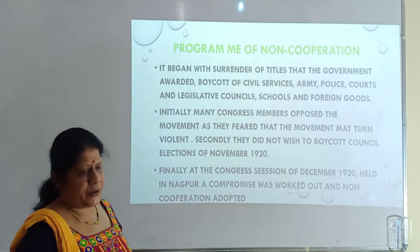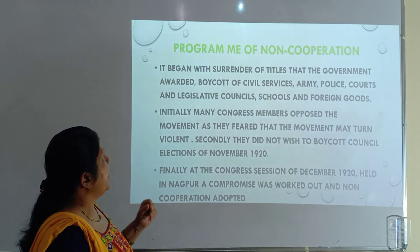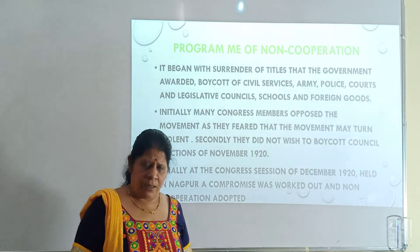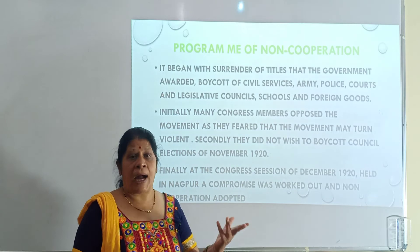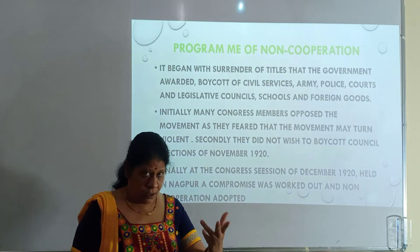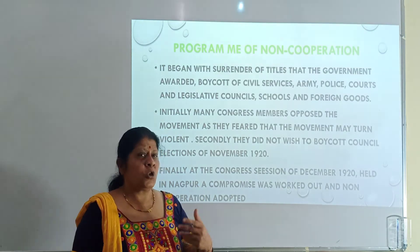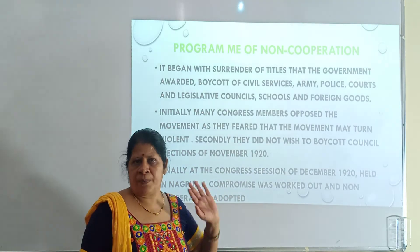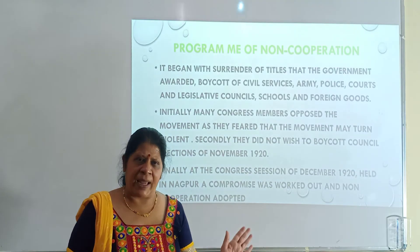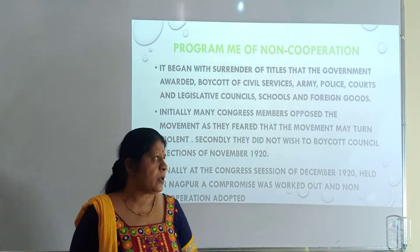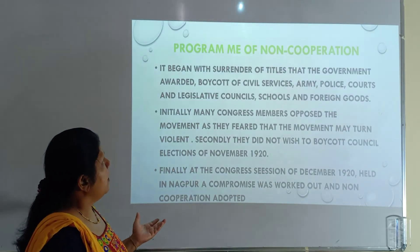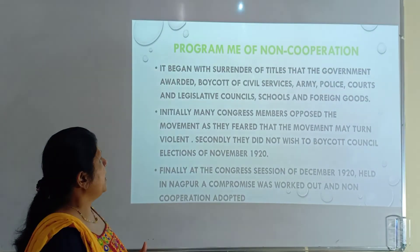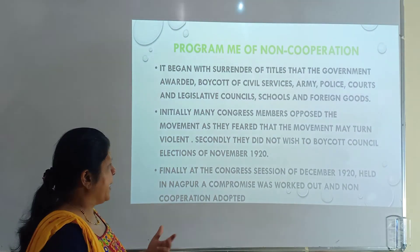What was the program of non-cooperation? It began with the surrender of titles that the government had awarded — like Raja Sahab, Sahab Bahadur, Sir — which were conferred on those loyal to the British. Gandhiji said those people who had received these titles should give them back. Then there was withdrawing children from government schools and colleges, not going to English courts, and boycotting British goods.